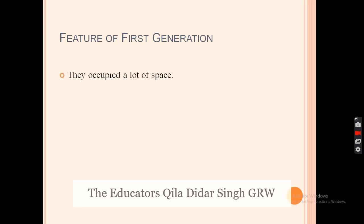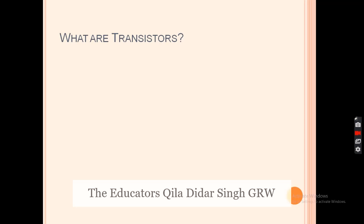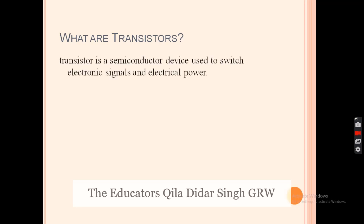The features of first generation computers are: they occupied a lot of space, they were expensive to operate, they used a lot of electricity and generated heat, and their speed was slow. The transistor was used in second generation computers. A transistor is a semiconductor device used to switch electronic signals and electrical power.